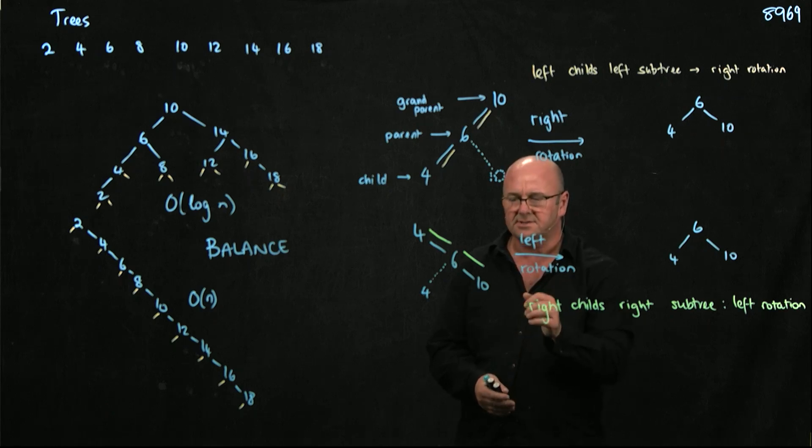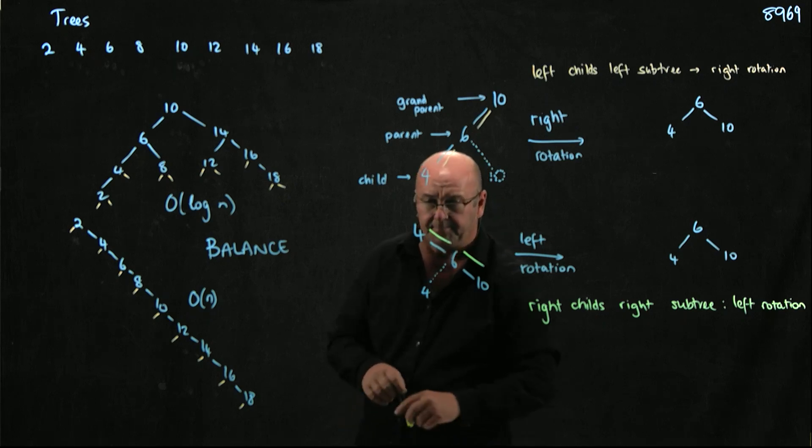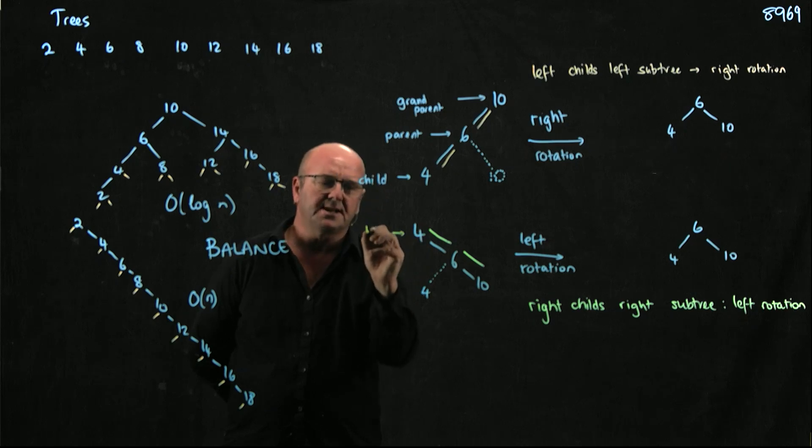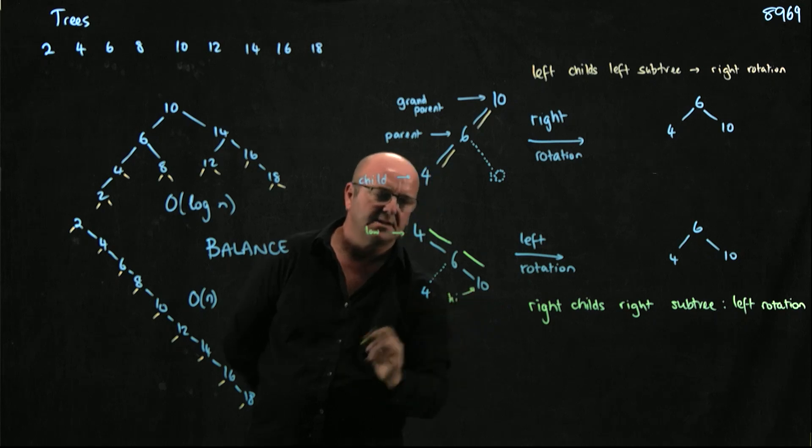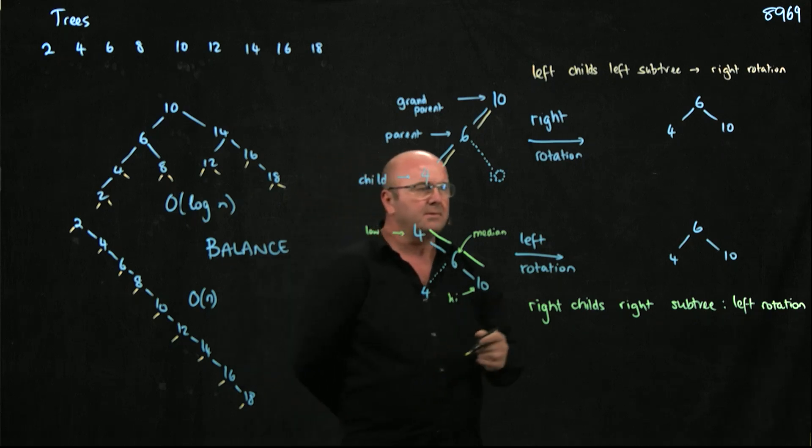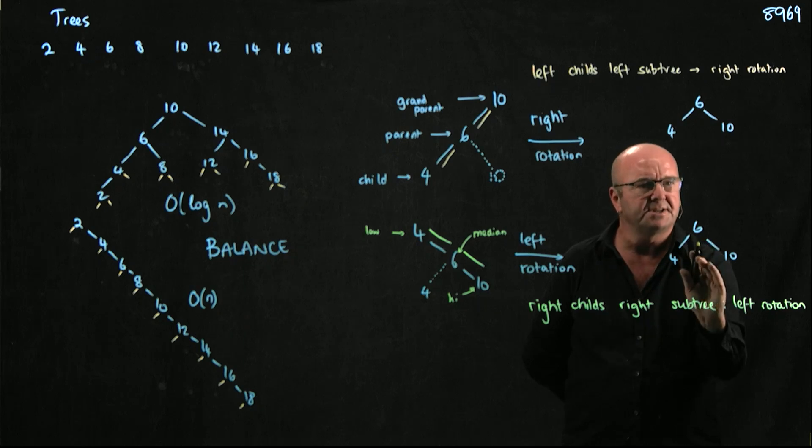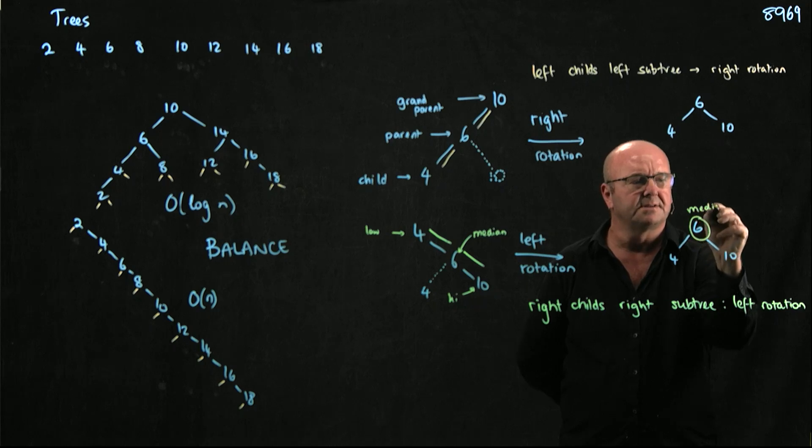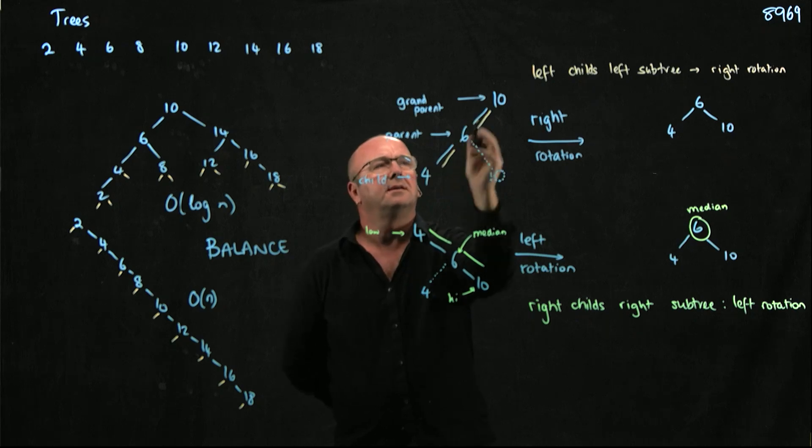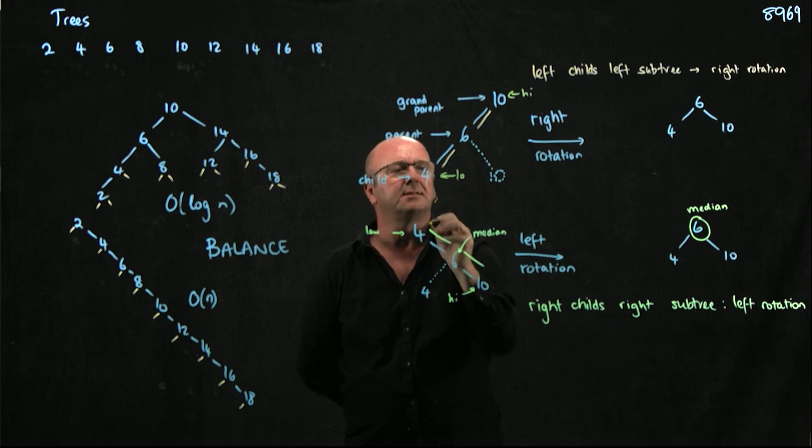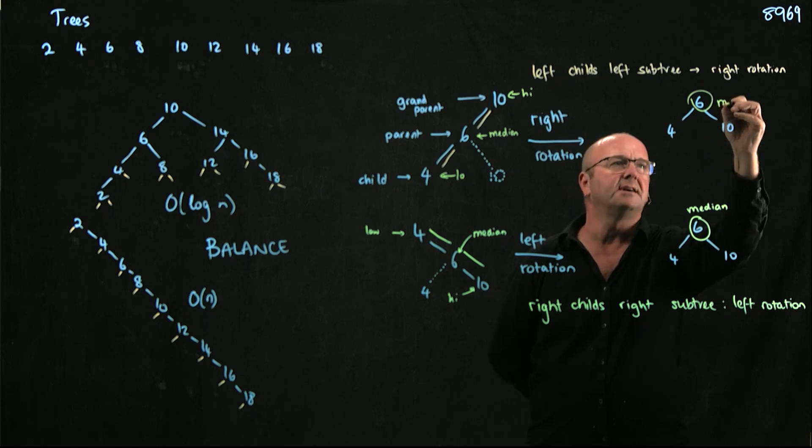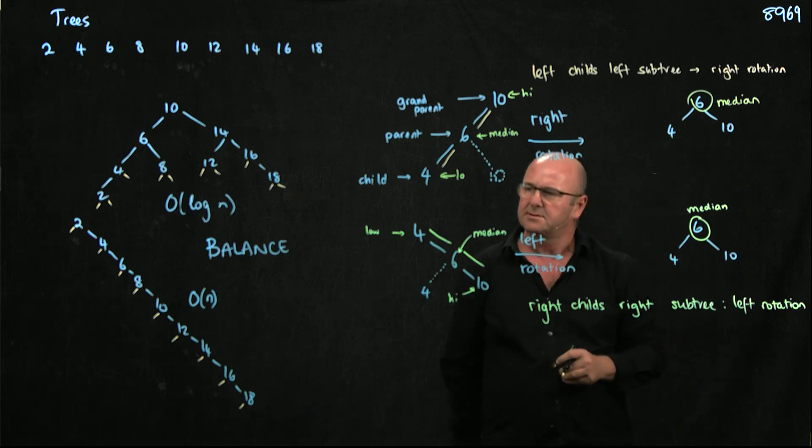And then the other thing I want you to think about and notice what's going on here, which is really critical, is that in each case, so here we have the smallest element, here we have the largest element, here we have the largest element, and here we have the median element. And what we're doing in our rotation is we're rearranging the tree so that our median element ends up on the top. So when we're rearranging these trees, we always do it so that the median element ends up on the top. The median element becomes the top, the root element.